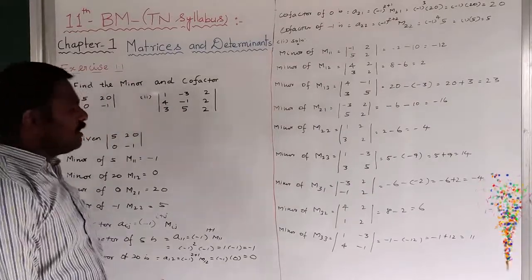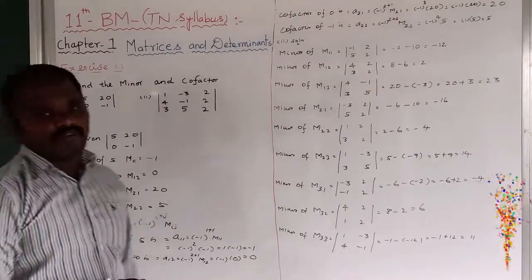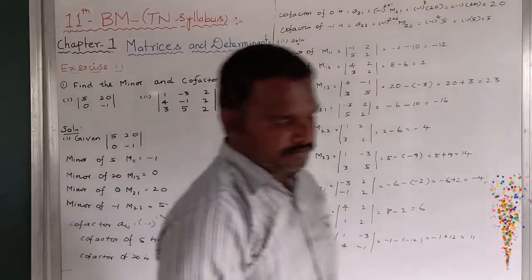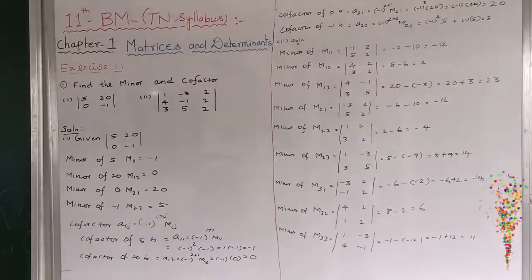So this completes the minor calculations. Now I want to find the cofactor — the cofactor function for the 3 by 3 matrix.